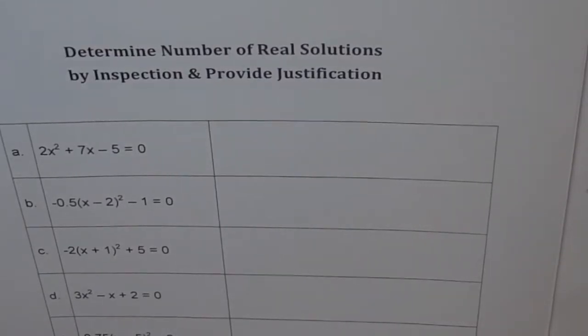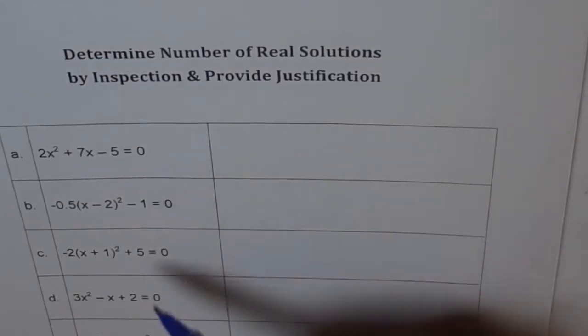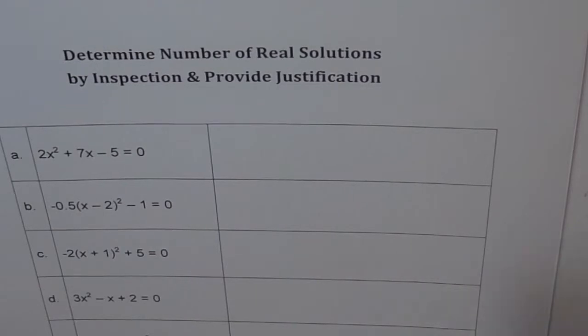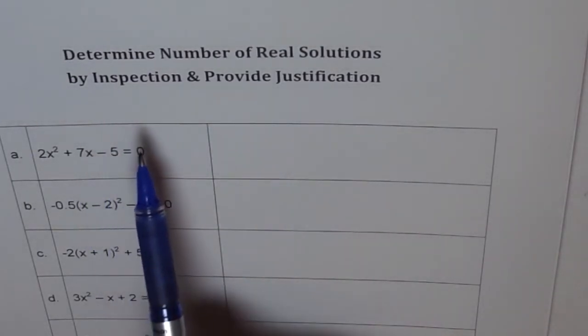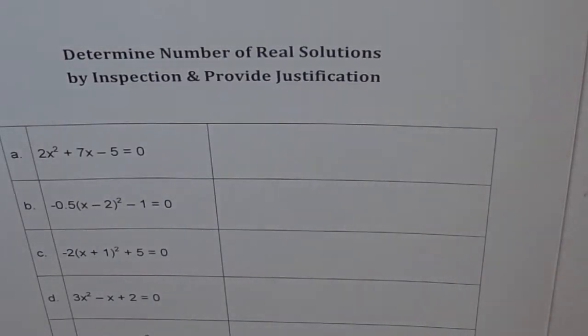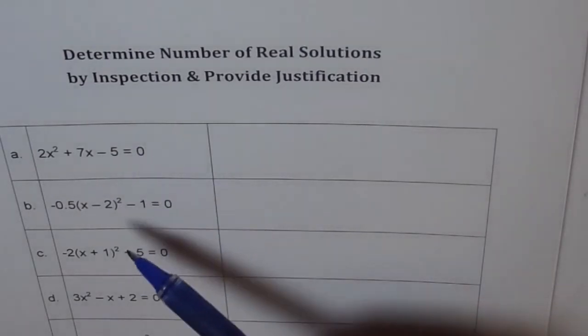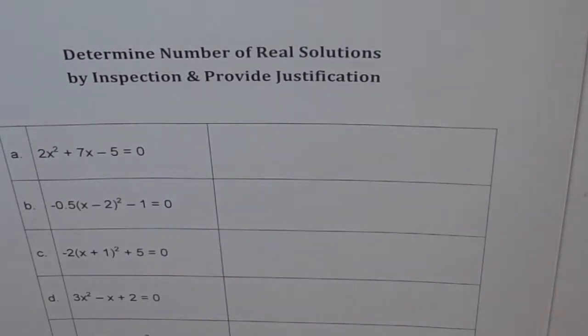Hello, here we are given a lot of quadratic equations. We need to determine the number of real zeros by inspection and provide justification. Now these equations are in different forms like standard form, vertex form, and we need to understand how to find logic so that we can figure out whether we have one x-intercept, two x-intercepts, or none.